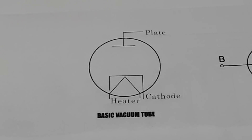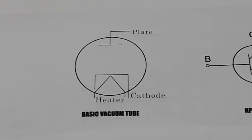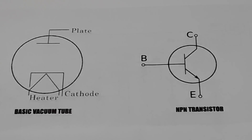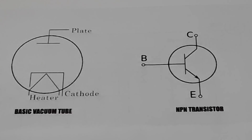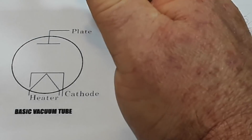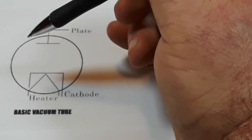Before we do that, I just want to show for anybody who is not up on vacuum tubes how they work like a transistor. Vacuum tubes were invented in 1904, and they were the number one way to amplify a signal or rectify a voltage until the late 1940s when Bell Laboratories invented the transistor.